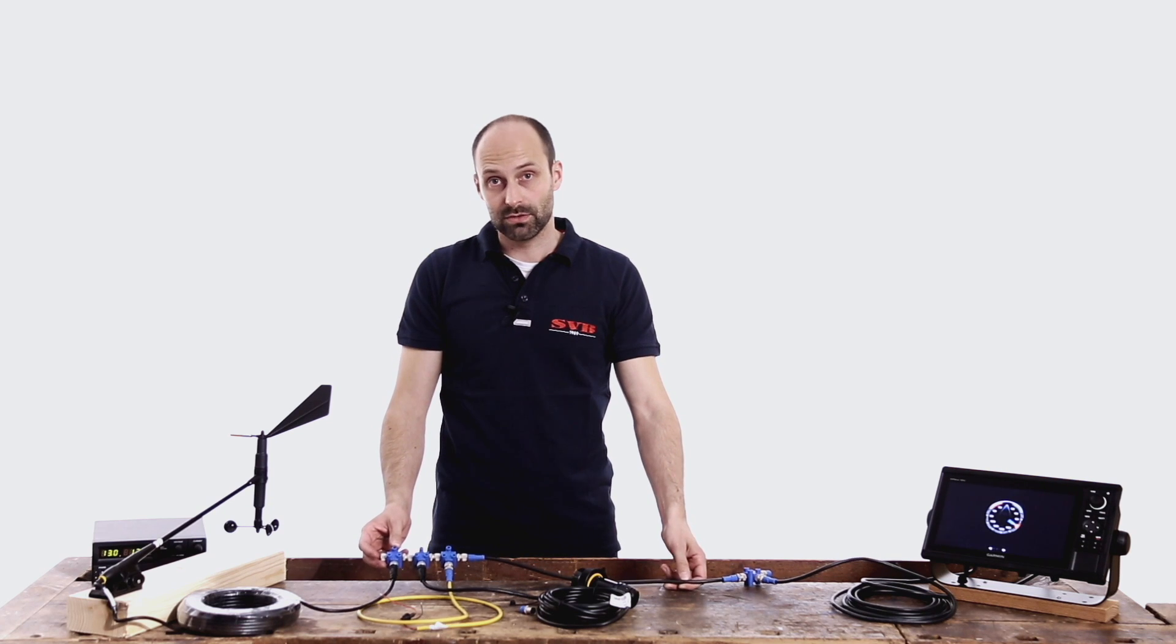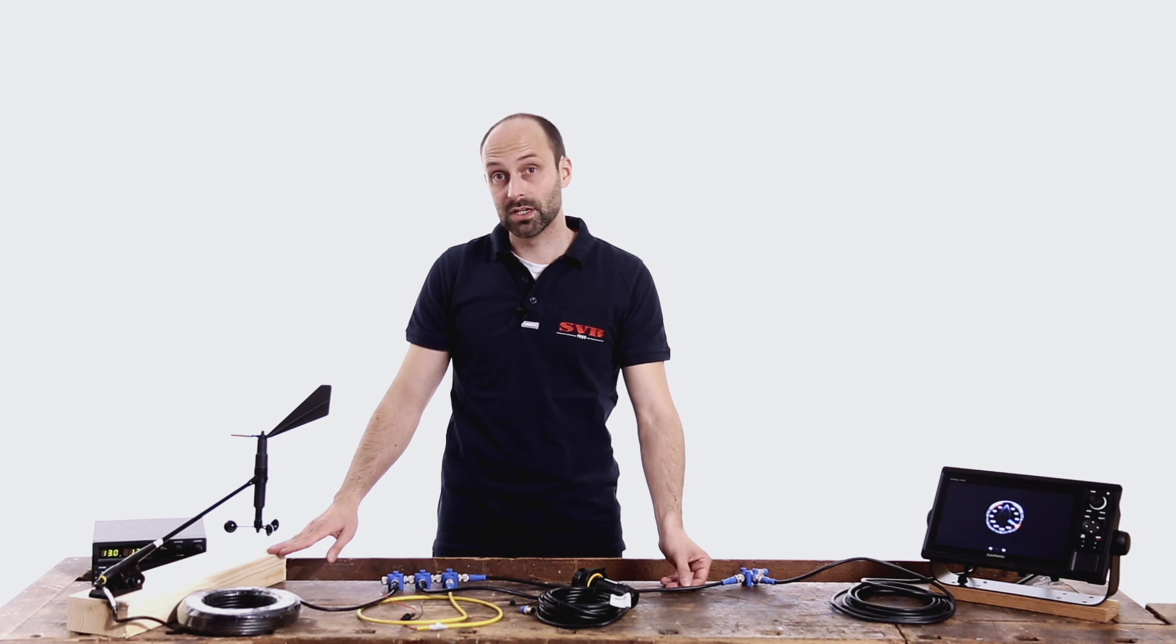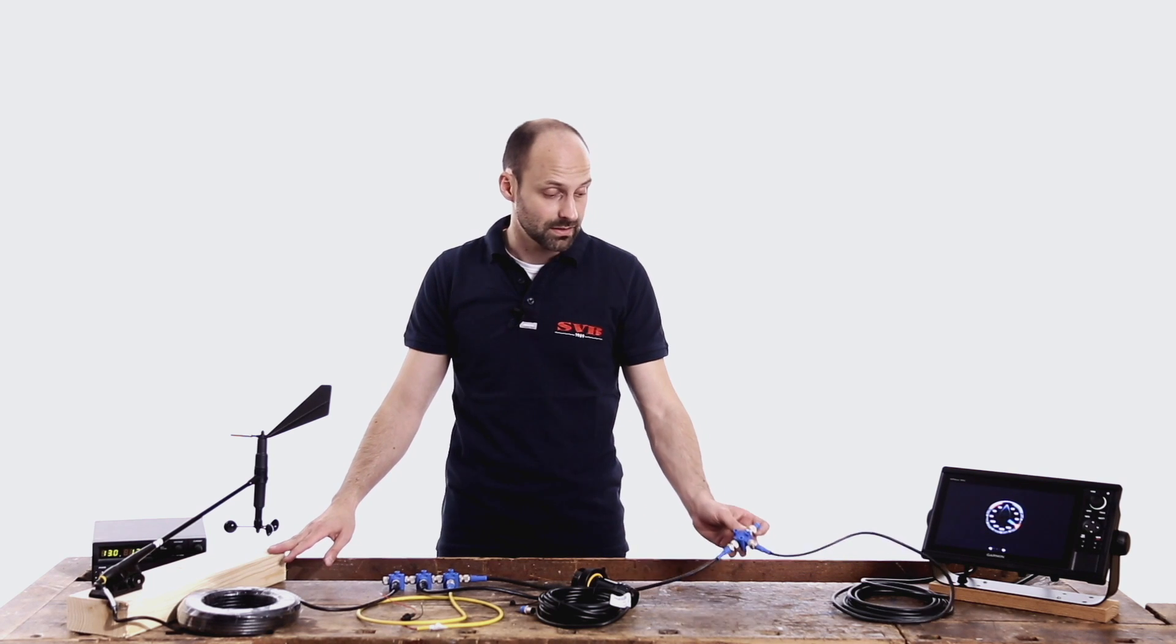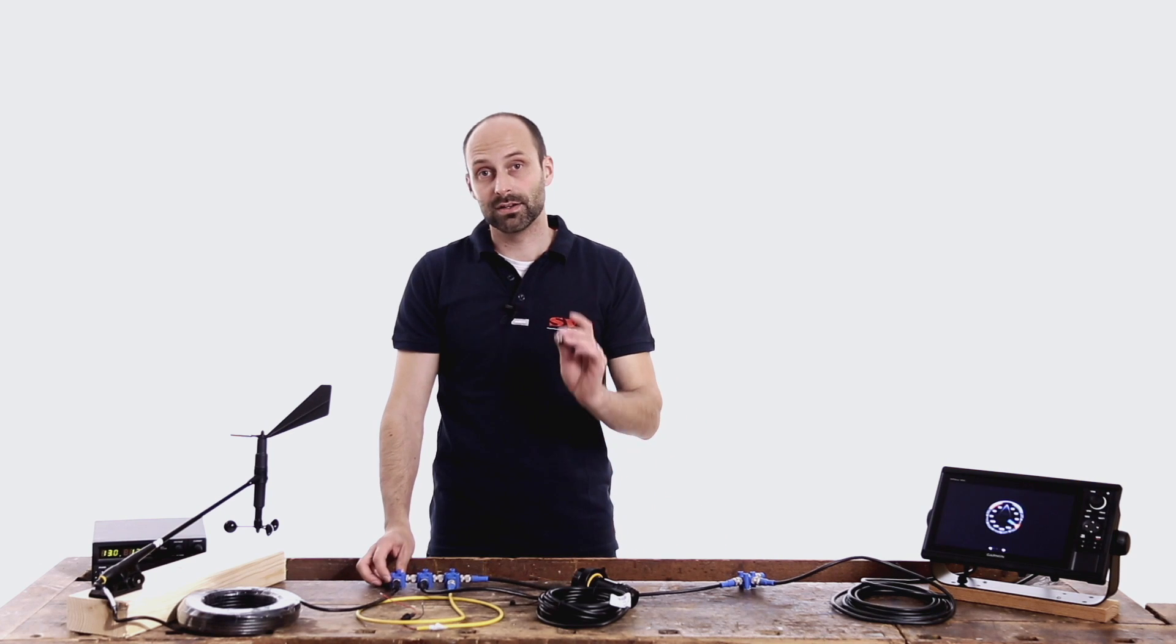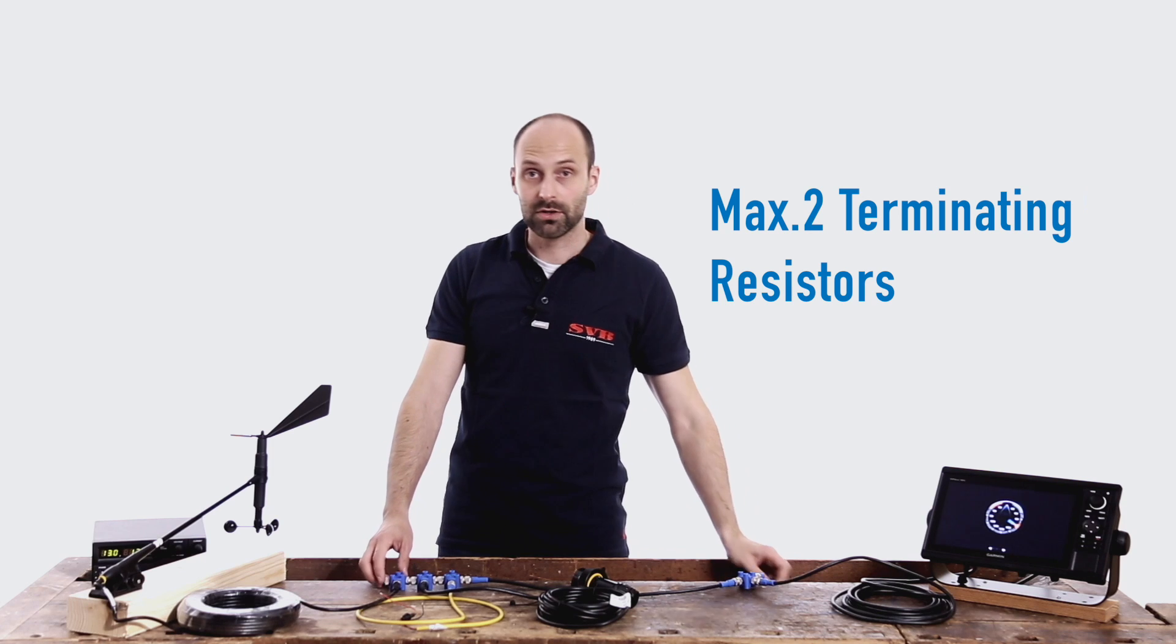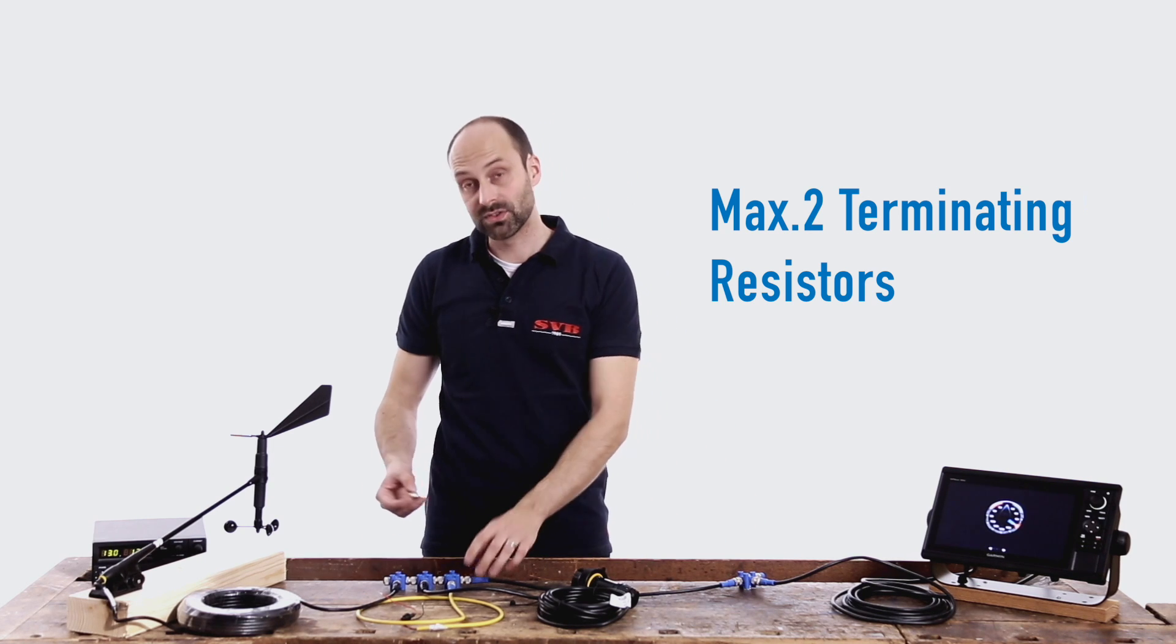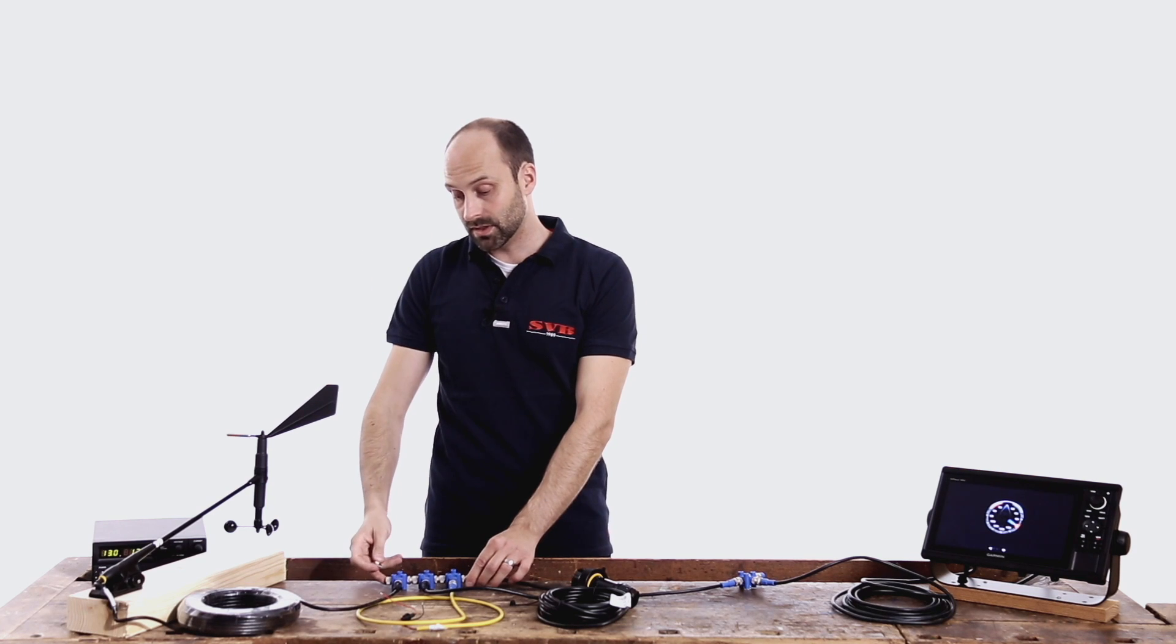We now have two terminating resistors in our system, as the device that we're using here is already equipped with a terminating resistor, and the other terminating resistor is here, the resistor that we have just removed is no longer necessary. To make sure that the system is waterproofed, we recommend placing a so-called dummy cap over the open T-piece.